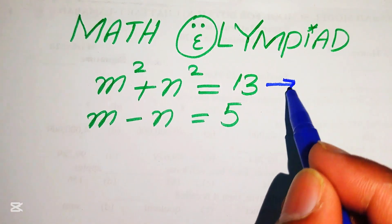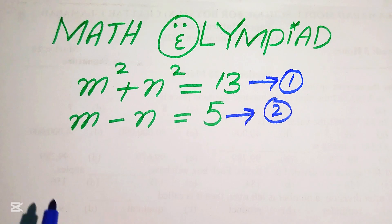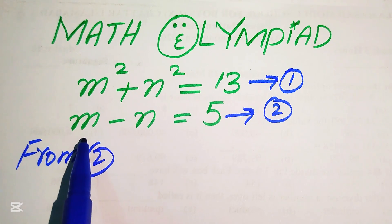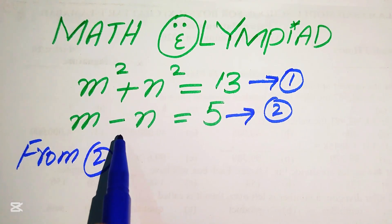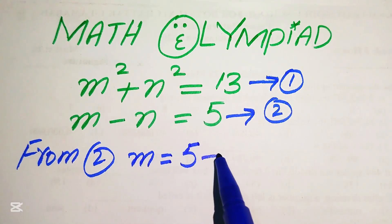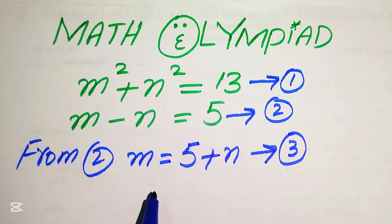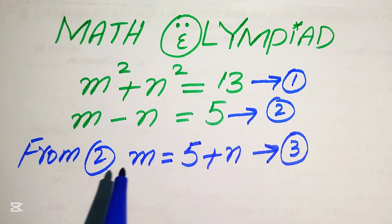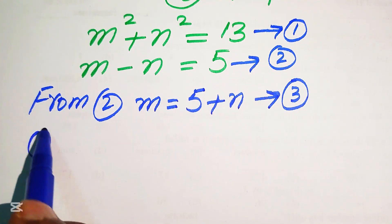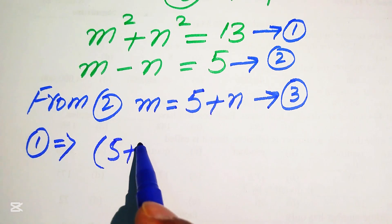We call the first equation number 1 and the second equation number 2. Now we focus on equation number 2. We move n to the right-hand side and easily get m = 5 + n, and we call this equation number 3. Now we substitute this value of m into equation number 1.